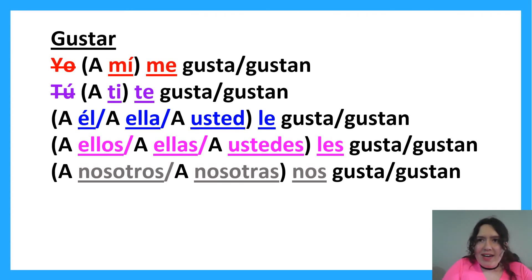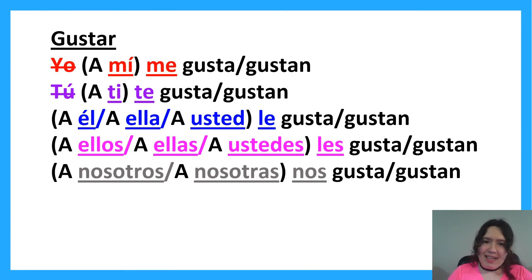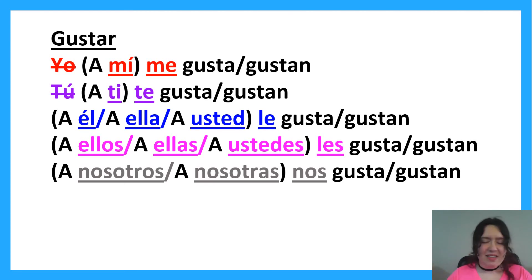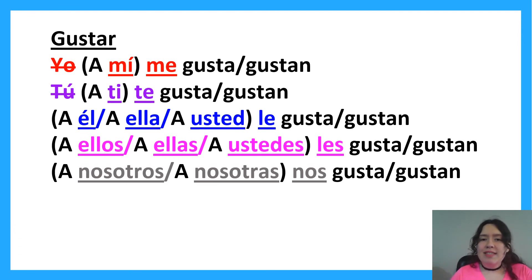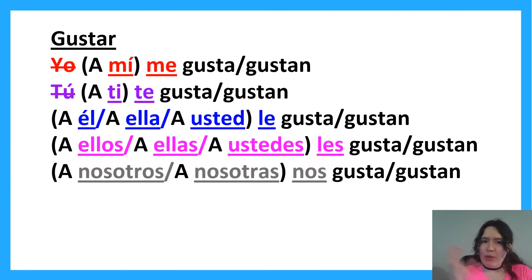If I say 'I like to run,' it's like 'running is pleasing to me.' So the verb gustar is going to be conjugated based on 'to run' — that thing. It's not conjugated for me. Same idea: 'I like bread' — bread is pleasing to me. So bread is the thing that we're conjugating gustar for.